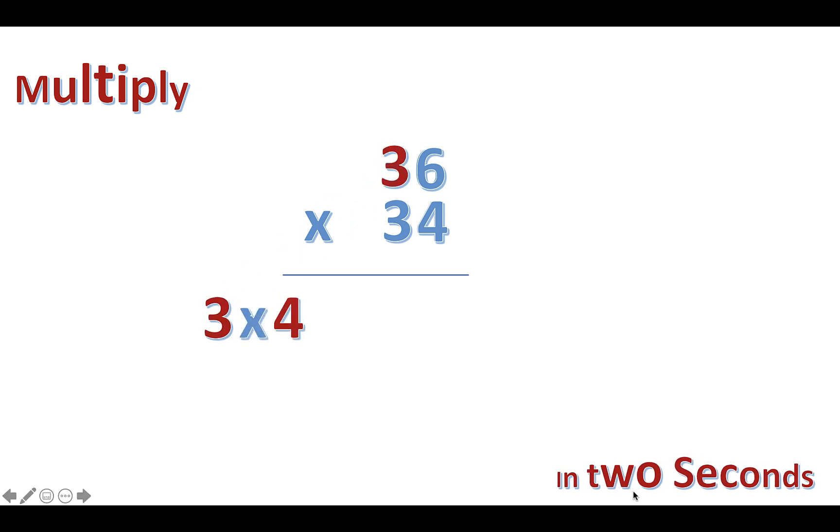The next step is to multiply 6 by 4, which is 24. Then we combine the numbers: 1,224. Whoa, that's genius!